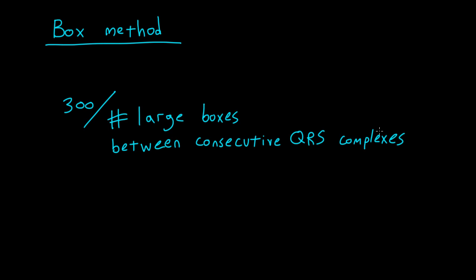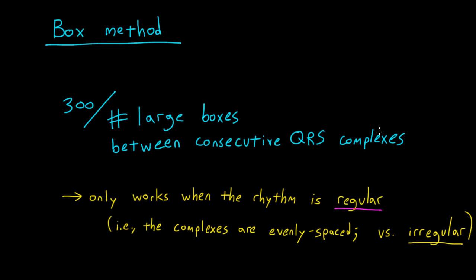It's important to note that the box method you can only do if the rhythm is regular. In other words, if the QRS complexes are evenly spaced. When you're dealing with an irregular heart rhythm, such as atrial fibrillation, you can't use the box method because you'll have two QRS complexes that are close to each other, and then you might have the next two that are farther away from each other.